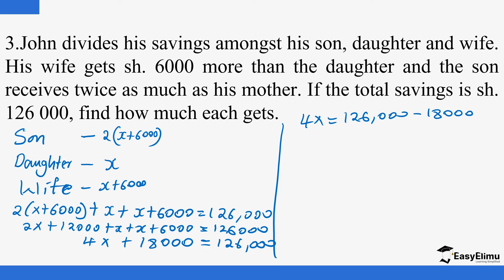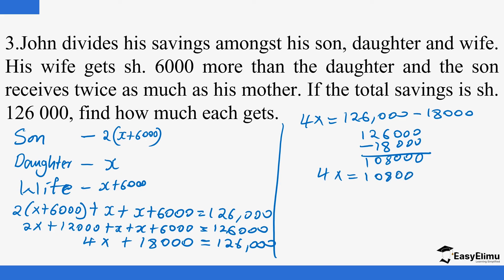Using long subtraction: 126,000 − 18,000. Borrowing: 16 − 8 = 8, 1 − 1 = 0, drop the 1, giving 108,000. So 4x = 108,000. Dividing both sides by 4: 4 goes into 10 twice (remainder 2), then 28 ÷ 4 = 7, add the three zeros, giving x = 27,000.